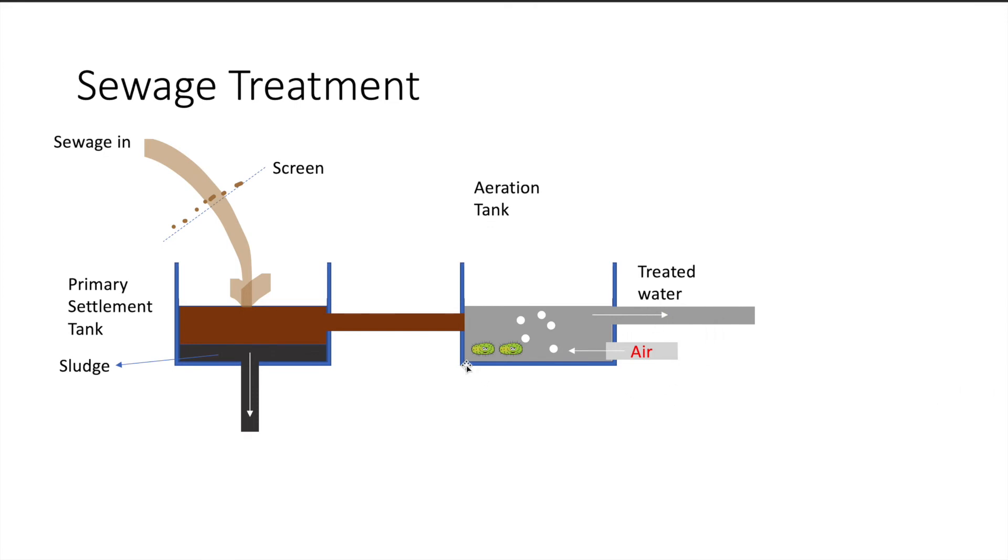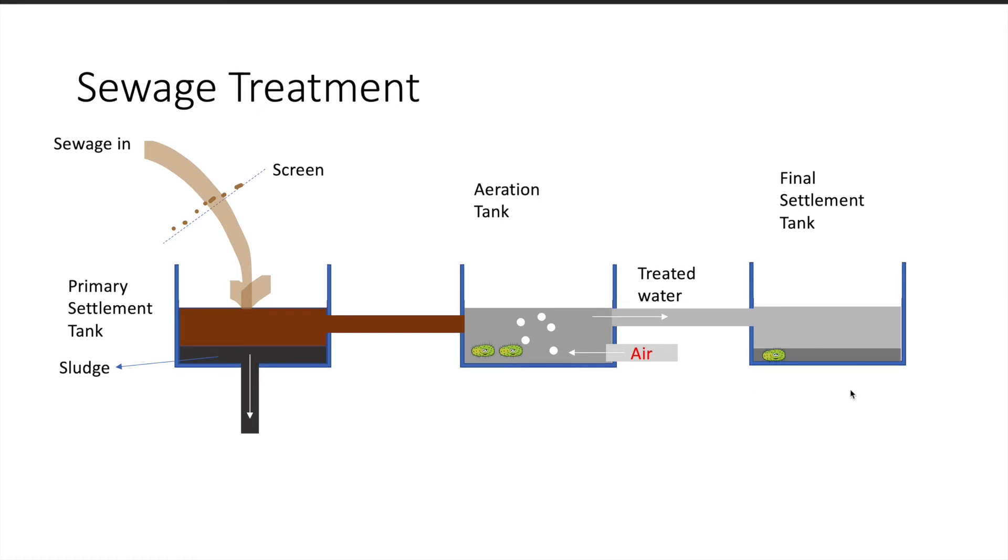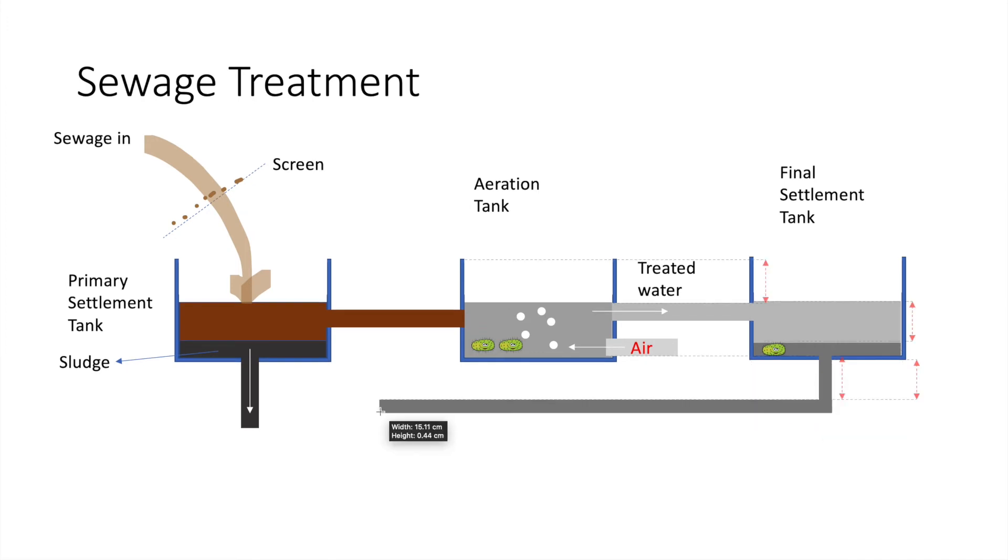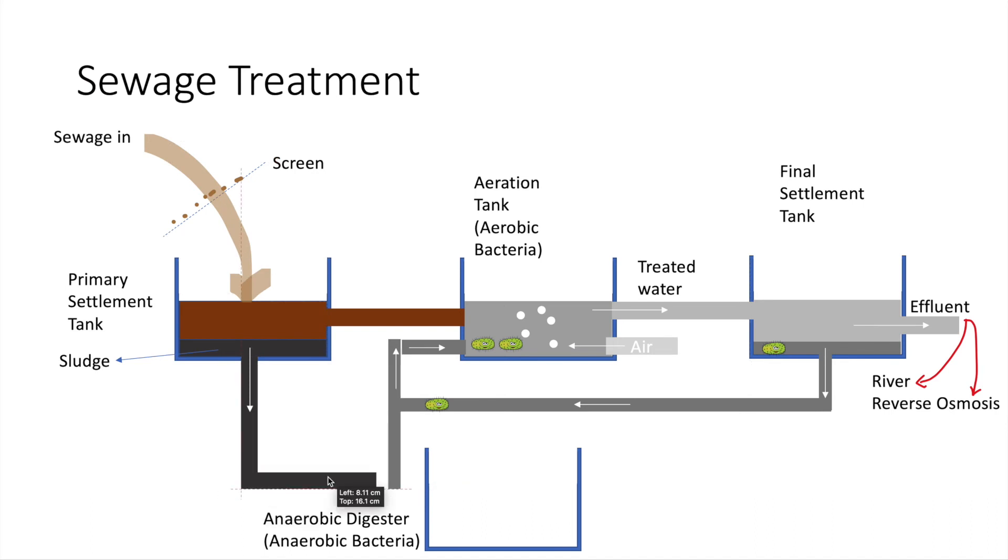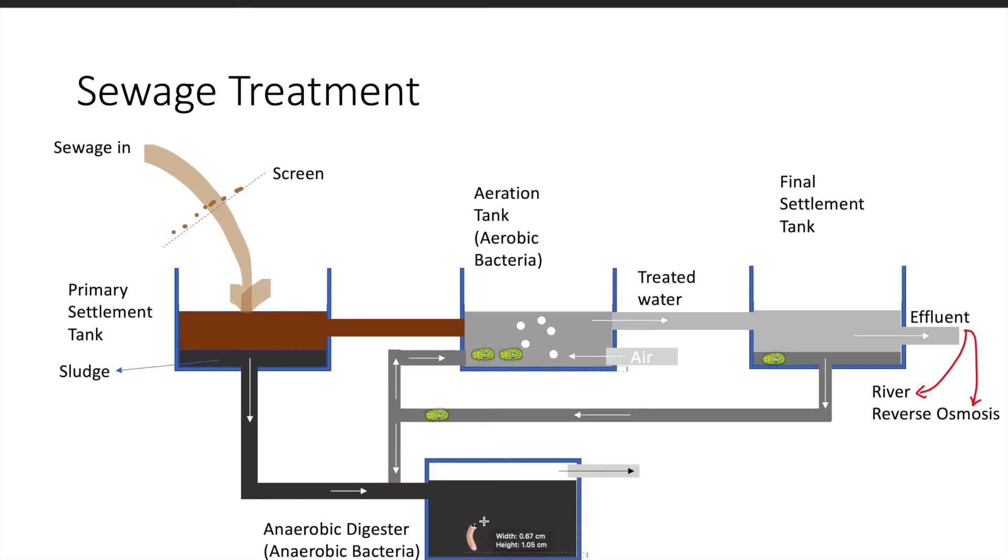The treated water is then channeled into a final settlement tank. Microorganisms settle to the bottom as sludge and the excess sludge will be sent to the anaerobic digester and a small portion will be returned to the aeration tank for it to remove organic pollutants. The effluent of the final settlement tank contains treated water that will be released into rivers or further treated by reverse osmosis to produce clean water known as new water in Singapore. And lastly in the anaerobic digester, anaerobic bacteria will further decompose the sludge producing biogas to be used as a fuel. The remaining processed sludge will be used as fertilizer or burnt.